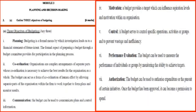Fifth: control. A budget serves to control specific operation activities or groups and to prevent wastage and inefficiency. Sixth: performance evaluation. The budget can be used to measure the performance of individuals or groups by monitoring the ability to achieve targets.